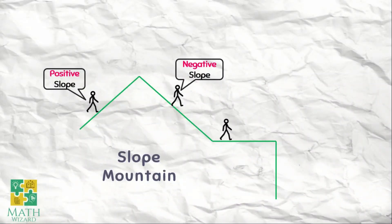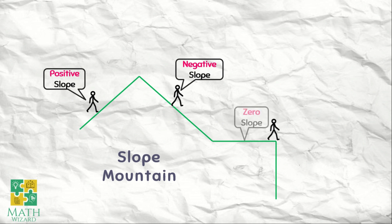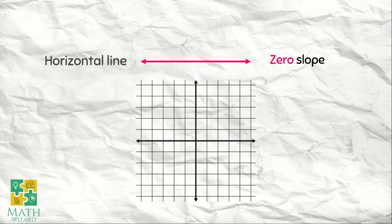But if the line is horizontal, the slope is zero. So in horizontal line, the slope is zero for this one. The slope of this one is zero, zero, zero.